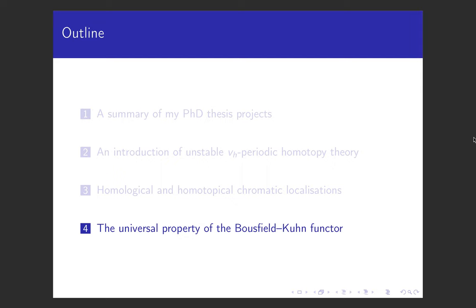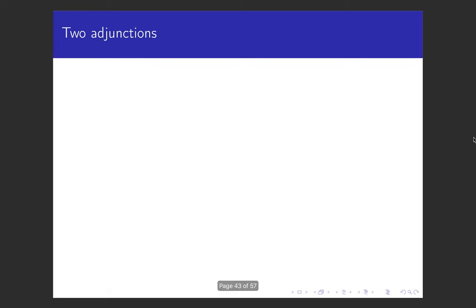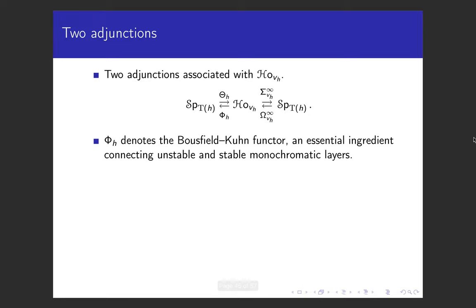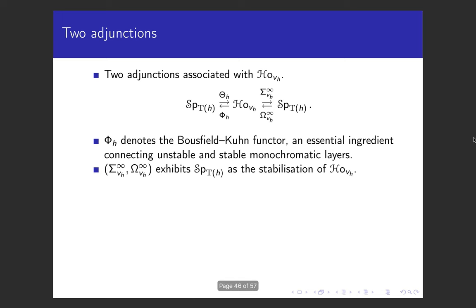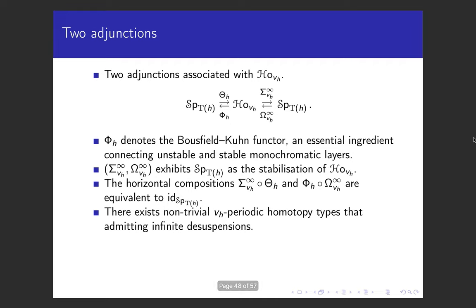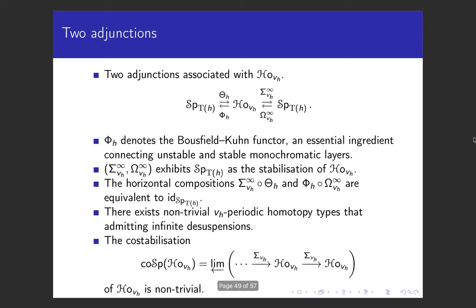In the last part of this presentation, I will talk about the universal property of the Bousfield-Kuhn functor. There are two adjunctions associated with the infinity category of VH periodic homotopy types. On the left-hand side is the Bousfield-Kuhn functor and its left adjoint. The Bousfield-Kuhn functor is an essential ingredient connecting unstable and stable monochromatic layers. On the right-hand side, it is the suspension infinity and loop infinity functors, which exhibits the TH-local spectra as the stabilization of the infinity category of VH periodic homotopy types. All horizontal compositions in this diagram are equivalent to the identity functor on TH-local spectra. This implies that there exist non-trivial VH periodic homotopy types that admit infinite desuspensions, which are exactly the objects in the co-stabilization of the infinity category of VH periodic homotopy types.